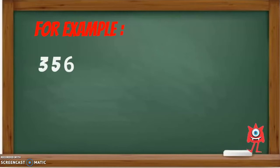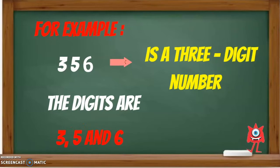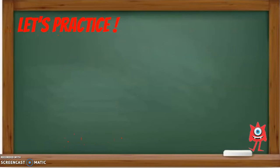For example, 356 is a 3-digit number and the digits are 3, 5, and 6. Ok, so now let's practice.